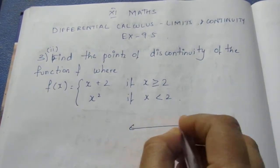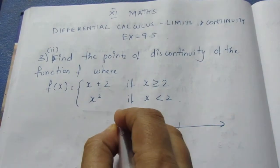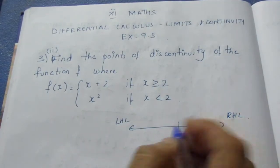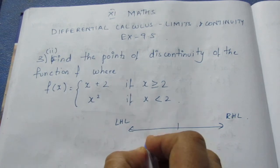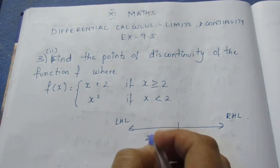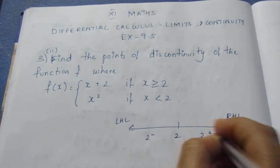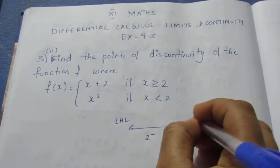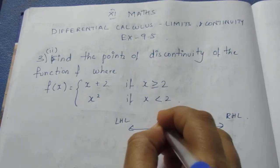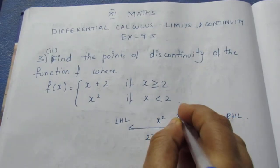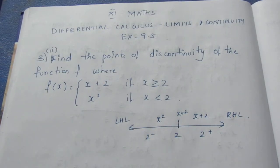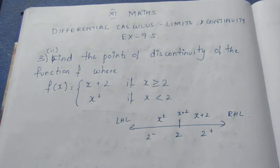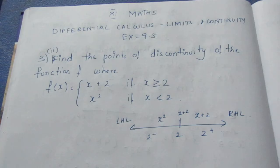At x = 2, we check whether the left-hand limit and right-hand limit are equal. Since 2 satisfies x greater than or equal to 2, we use x plus 2 for the right-hand side, and x squared for the left-hand side.